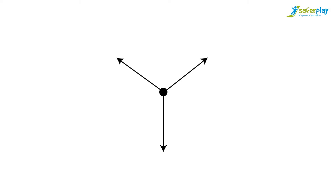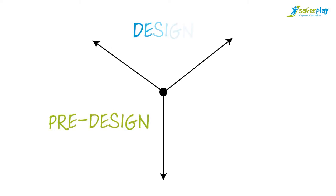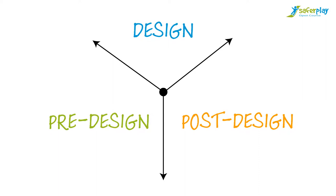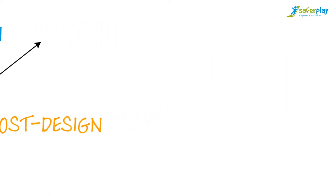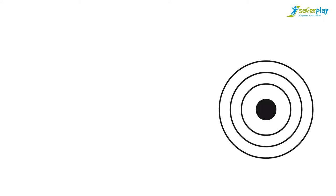The phases are pre-design, design, and post-design. These phases cover the whole life cycle of the public space, from its conception through continual operation, maintenance, and redevelopment in response to changing conditions and needs.